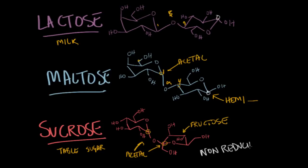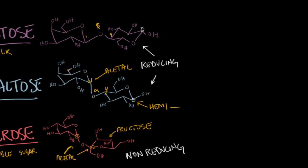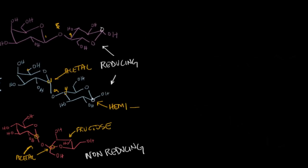Lactose and maltose are both reducing sugars. So lactose, maltose, and sucrose are probably the three most common disaccharides, and they give us a good basis. Polysaccharides are really just an extension of this thought.